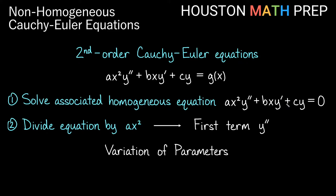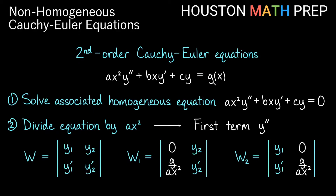The first thing you do is solve your complementary function by solving the associated homogeneous equation — the left side equal to 0. In the same way as with constant coefficient equations when a was not equal to 1, we will divide our equation by ax squared to get our leading term to be just y double prime. Once we've divided through by ax squared, we'll use variation of parameters, and our right side becomes g over ax squared.